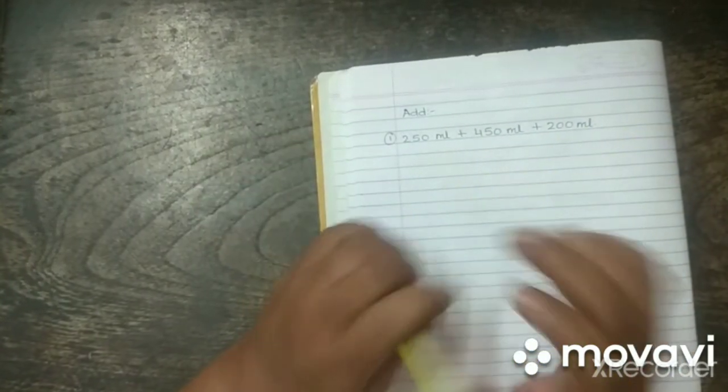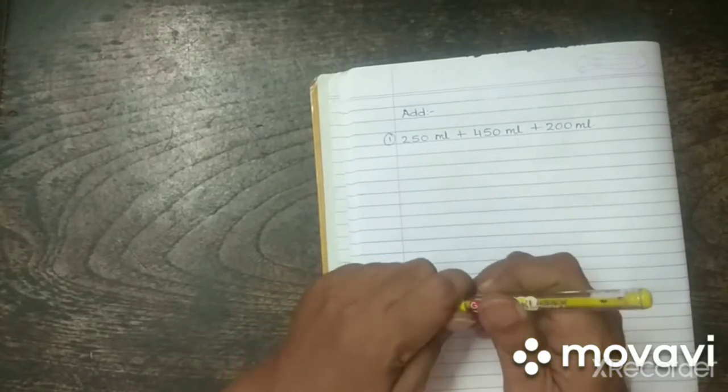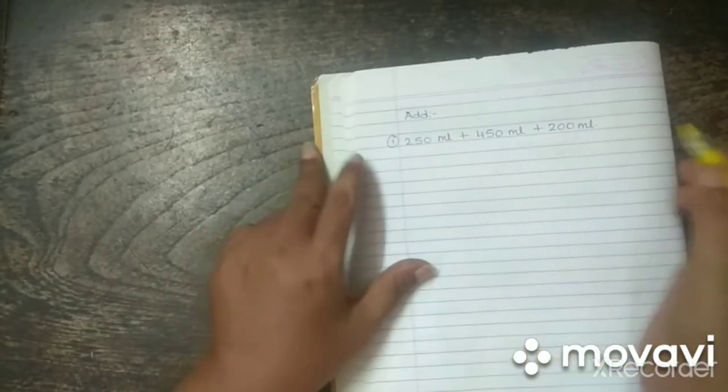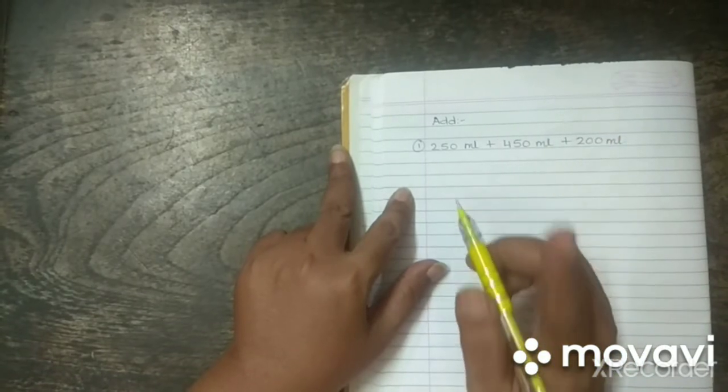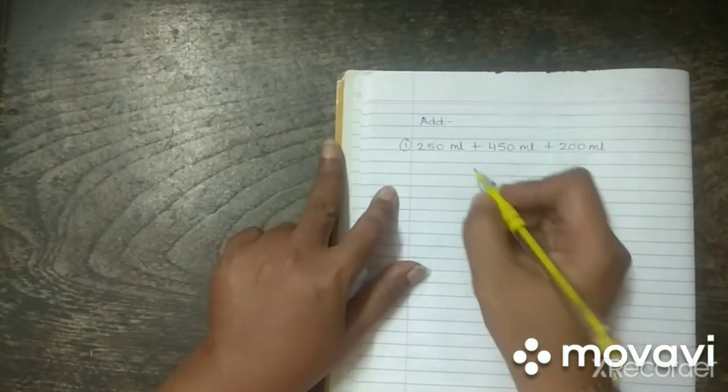This is simple addition. So, for addition, how will you write the sum? Remember, units ke neche units, tens ke neche tens and hundreds ke neche hundreds. Okay?